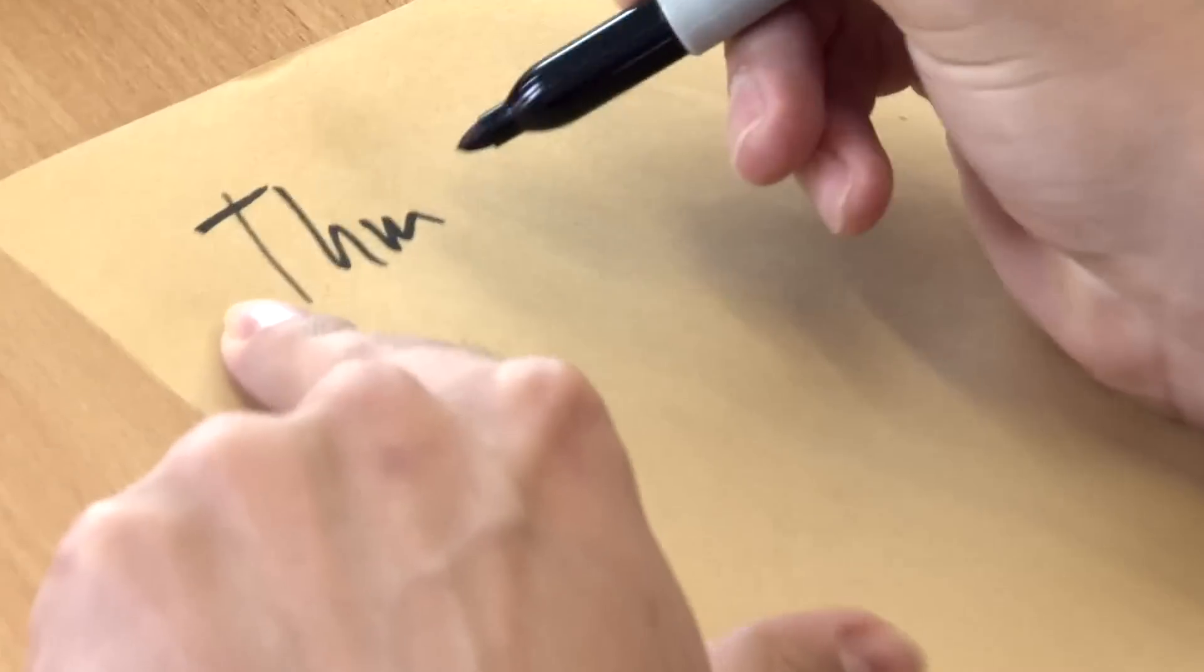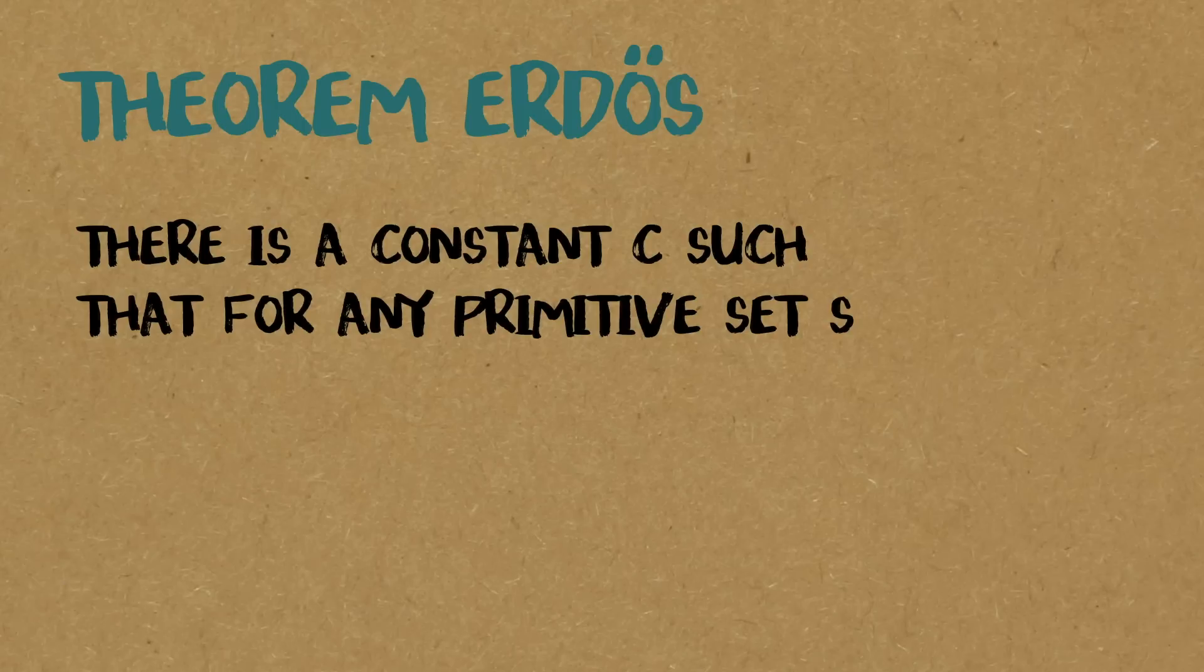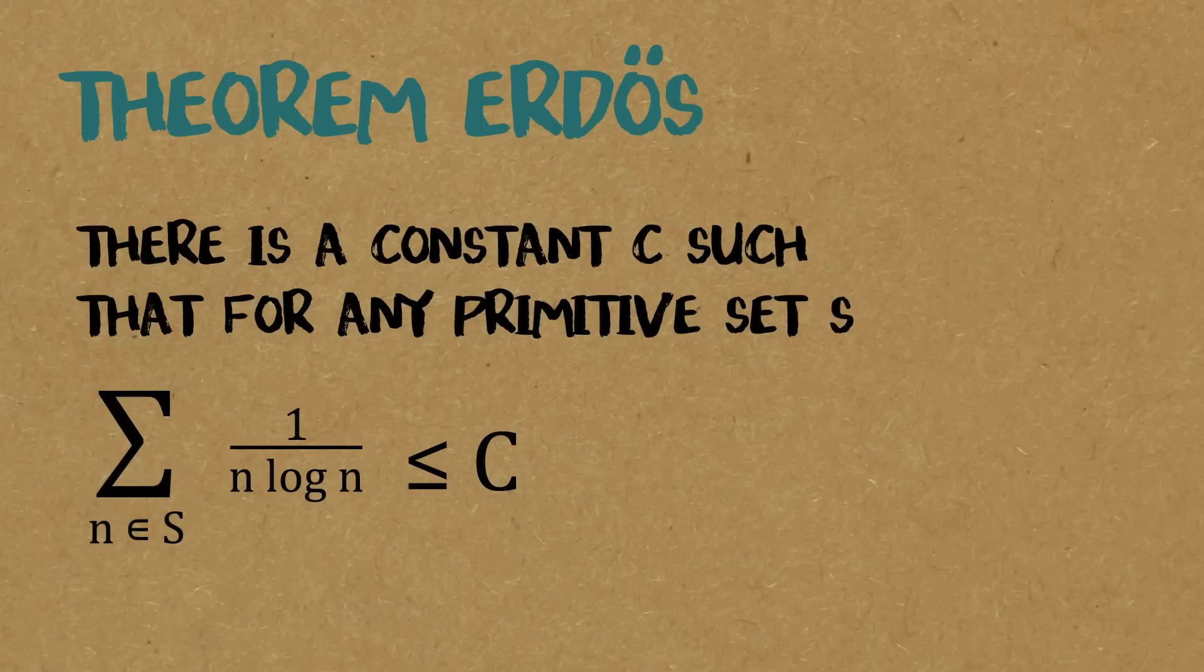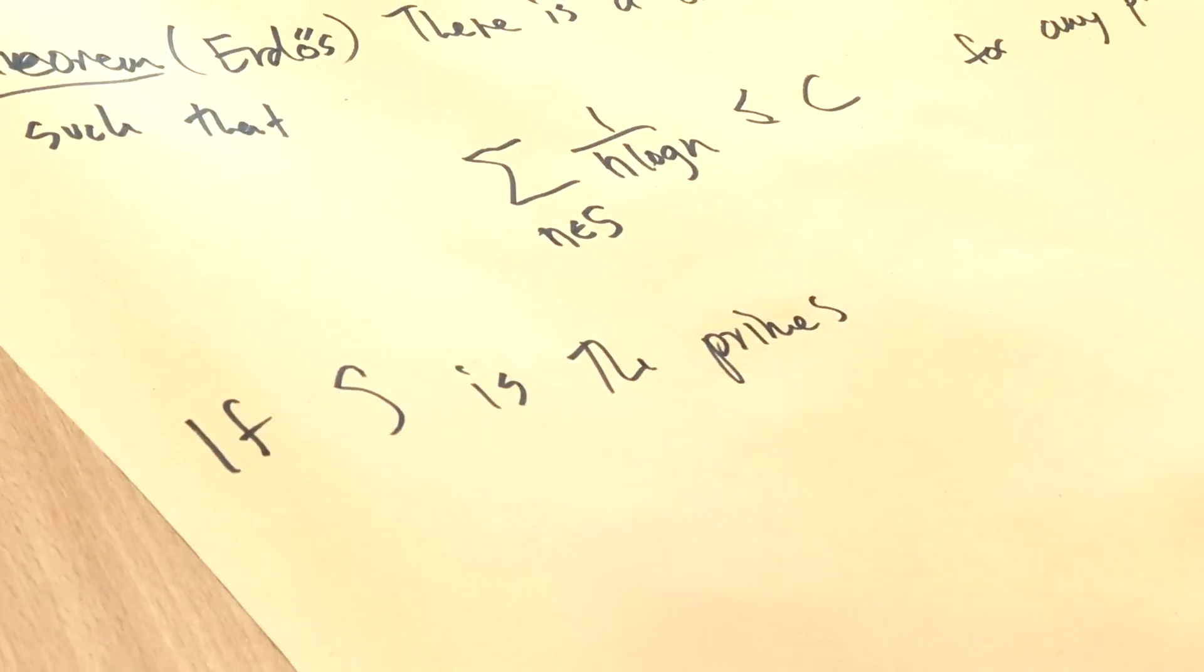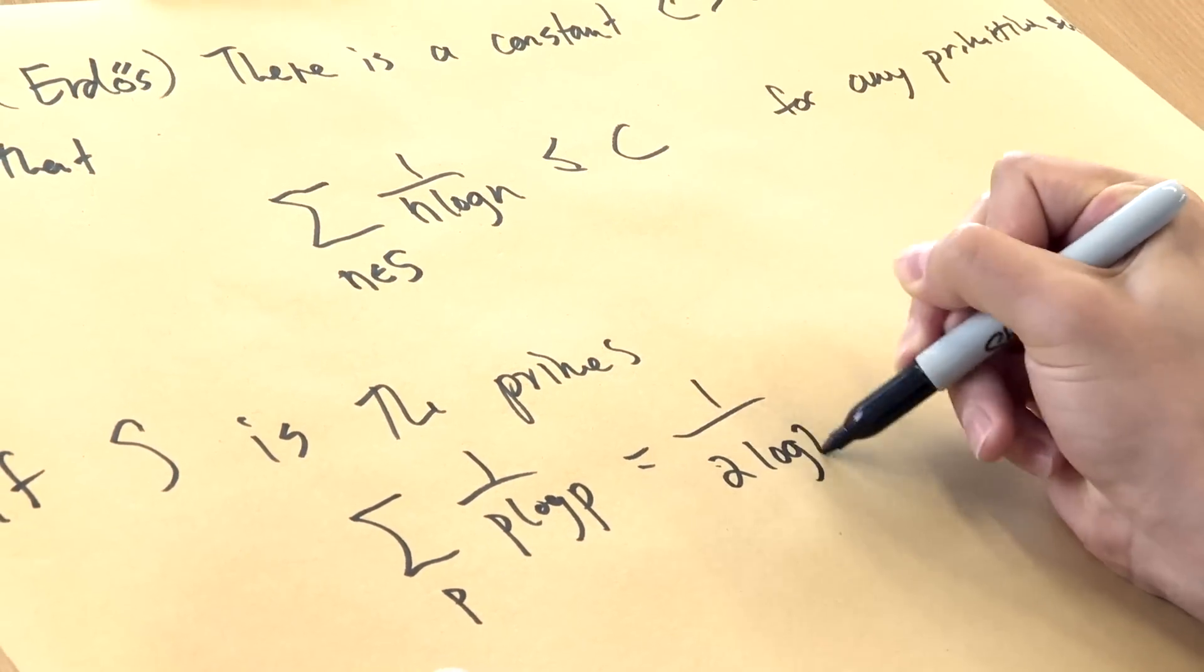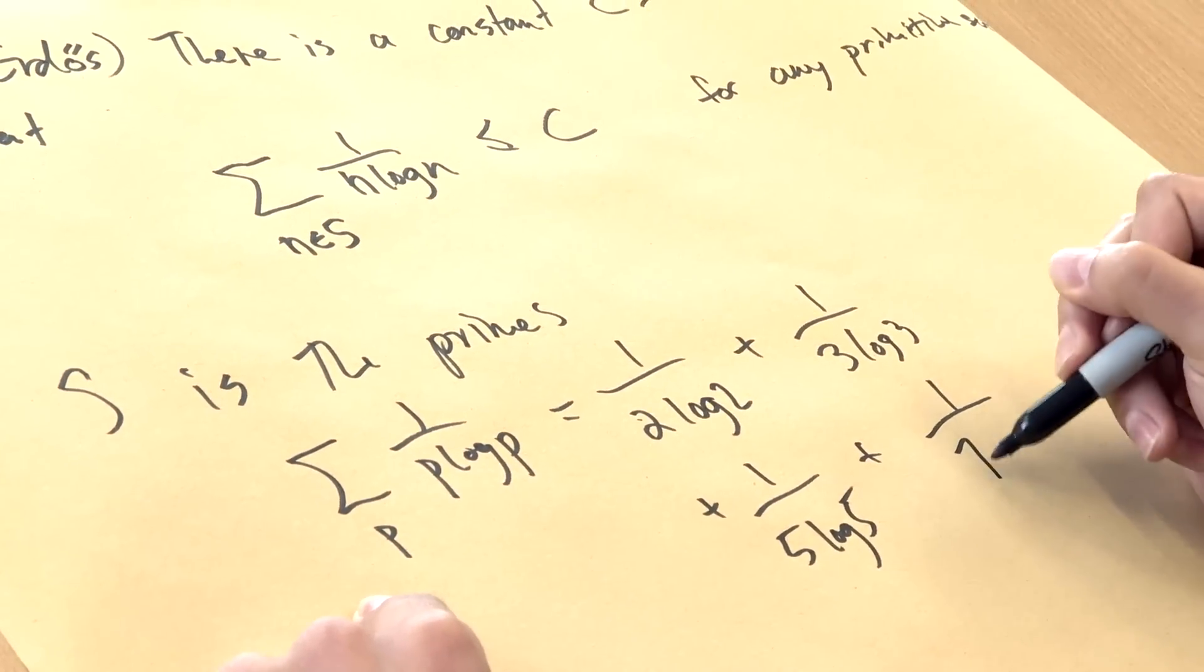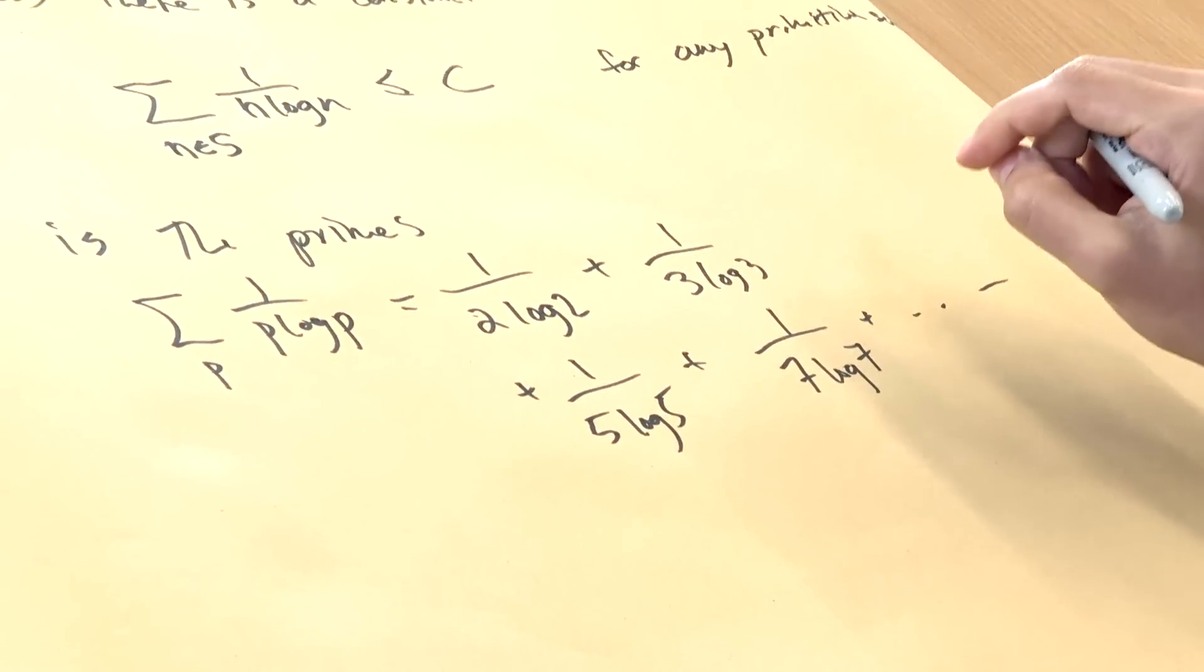Paul Erdős was interested in these sets, and he proved the following result. In 1935, Erdős showed that there is a constant c such that for any primitive set, let's say s, the sum of 1 over n log n, for n ranging in your set, is at most this constant c for any primitive set s. This is saying that we have a series that converges. For any set you throw at me, I'll spit back at you a number, particularly this convergent series.